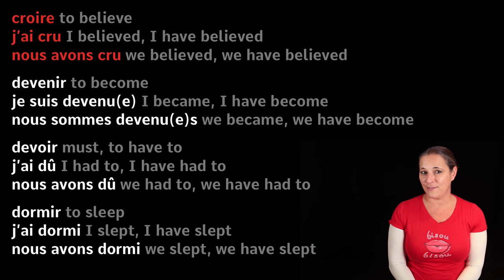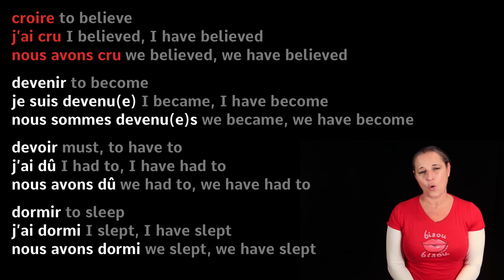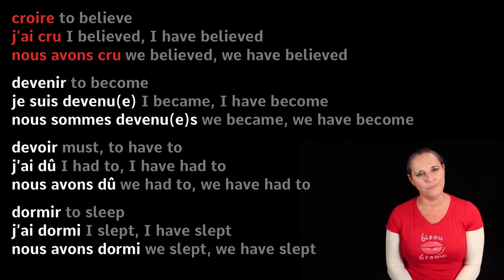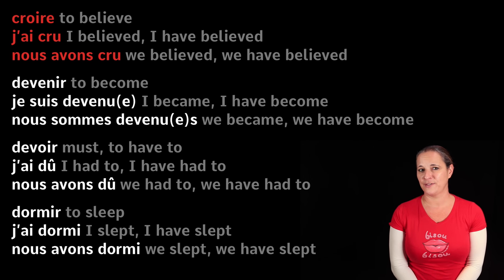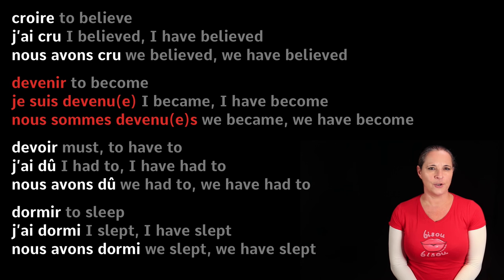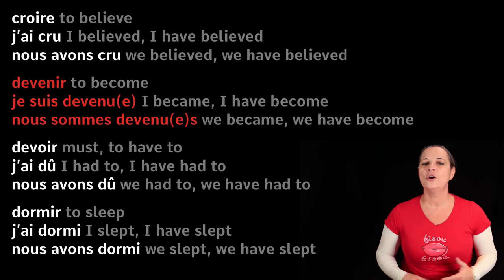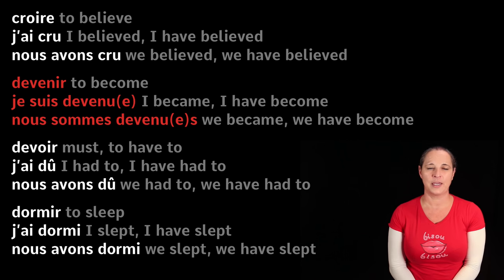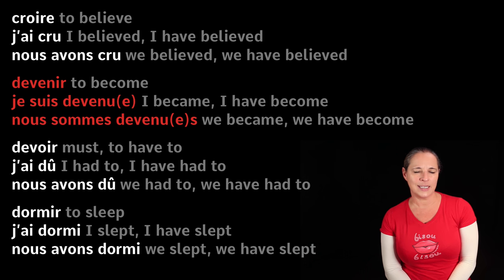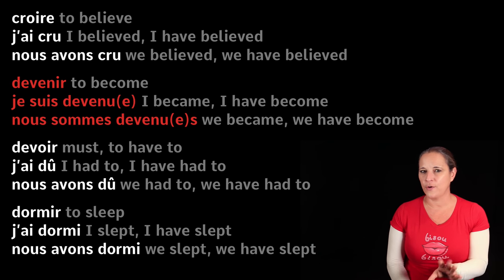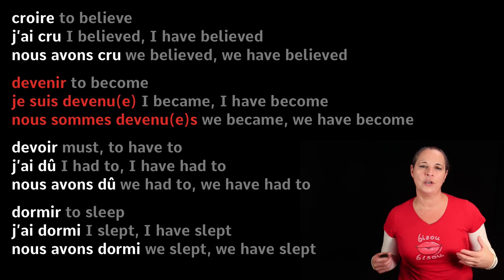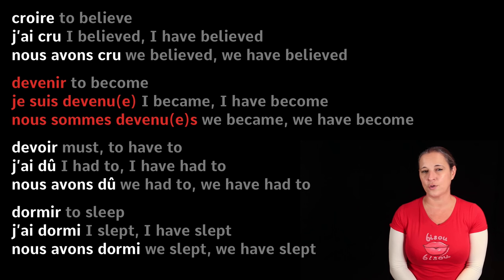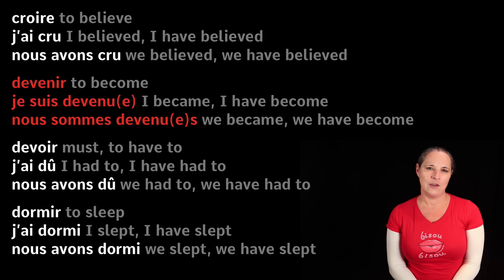Croire means 'to believe.' The past participle of croire becomes cru. J'ai cru — I have believed. Nous avons cru — we have believed. Devenir means 'to become.' Je suis devenu — I have become. Nous sommes devenus. Notice we are using the auxiliary 'to be' and not 'to have' here, because devenir belongs to those verbs conjugated with être in the past tense.